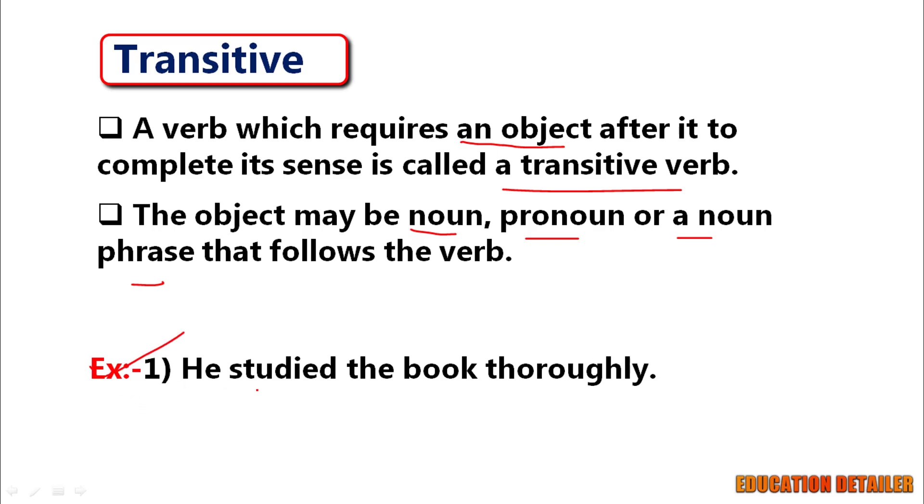Look at some examples to understand the transitive verb even better. He studied the book thoroughly. Here studied is a verb. The book is an object, a direct object.